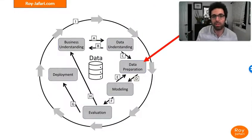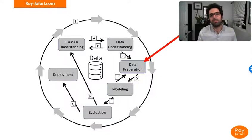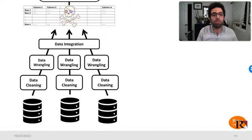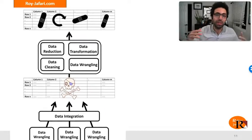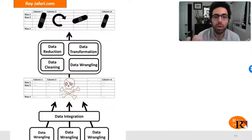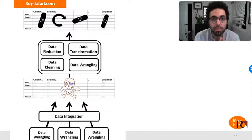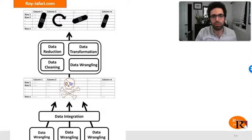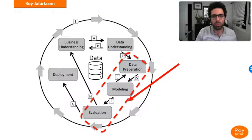Data preparation basically consists of cleaning and wrangling the data and then integrating it. Once that integration is done, you clean, massage, and transform the data to get to a dataset that is capable of helping you with your modeling — which is the next step in the CRISP-DM framework.